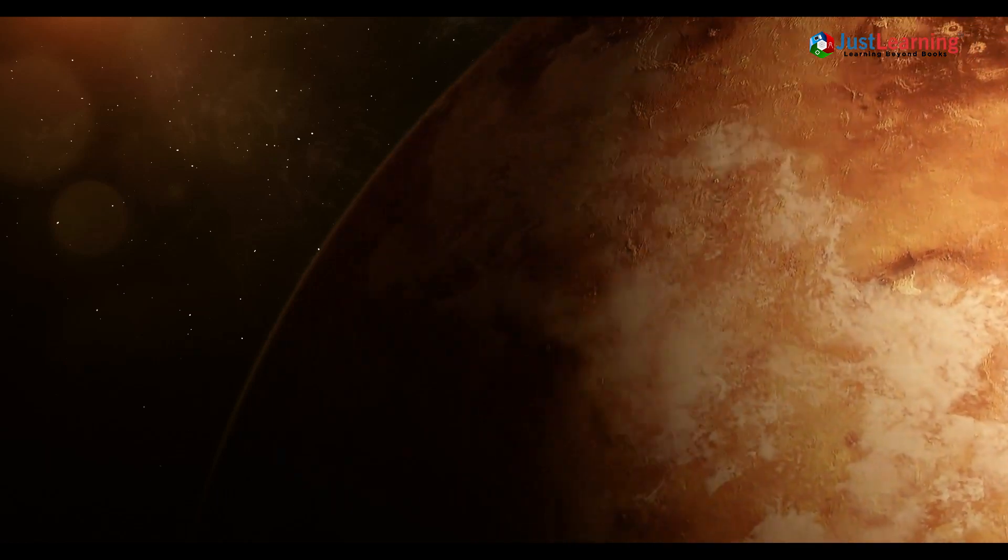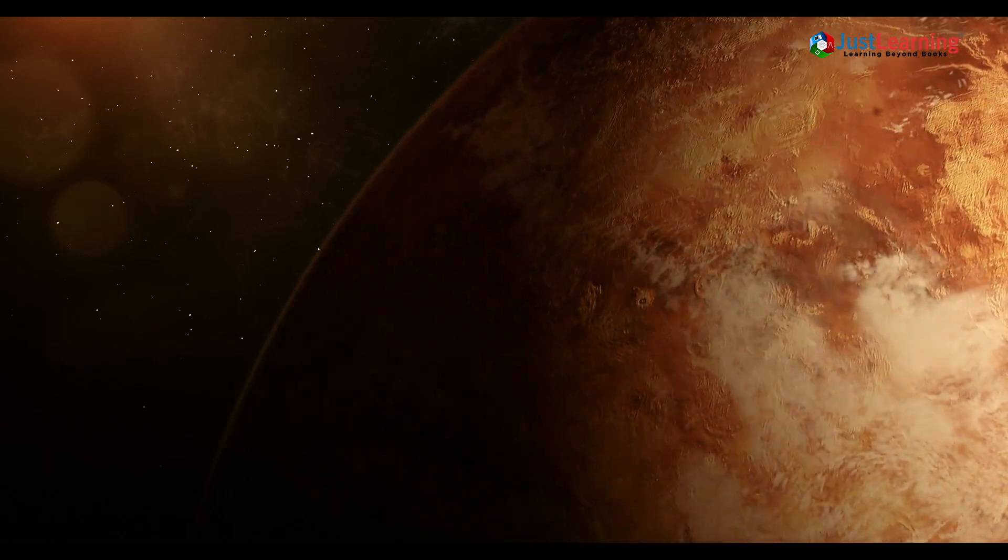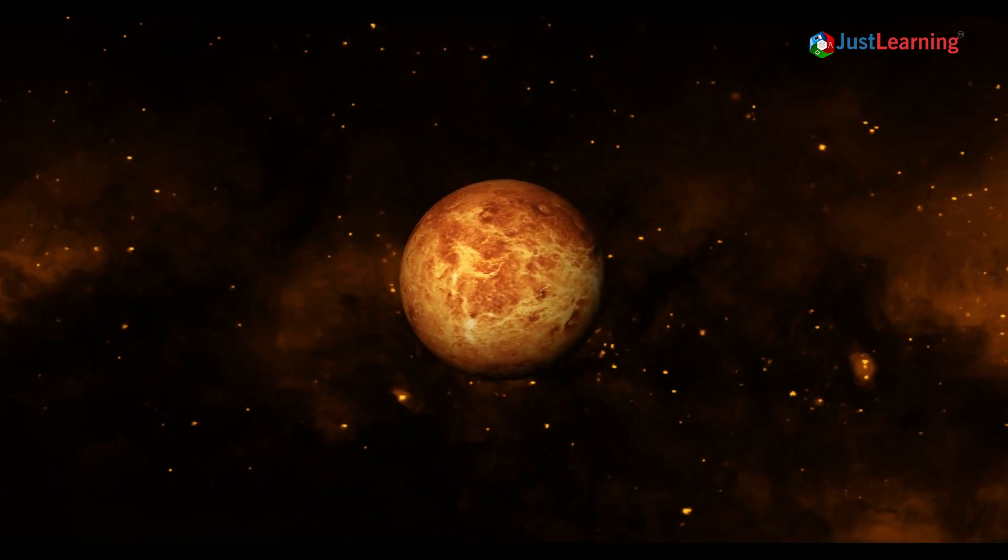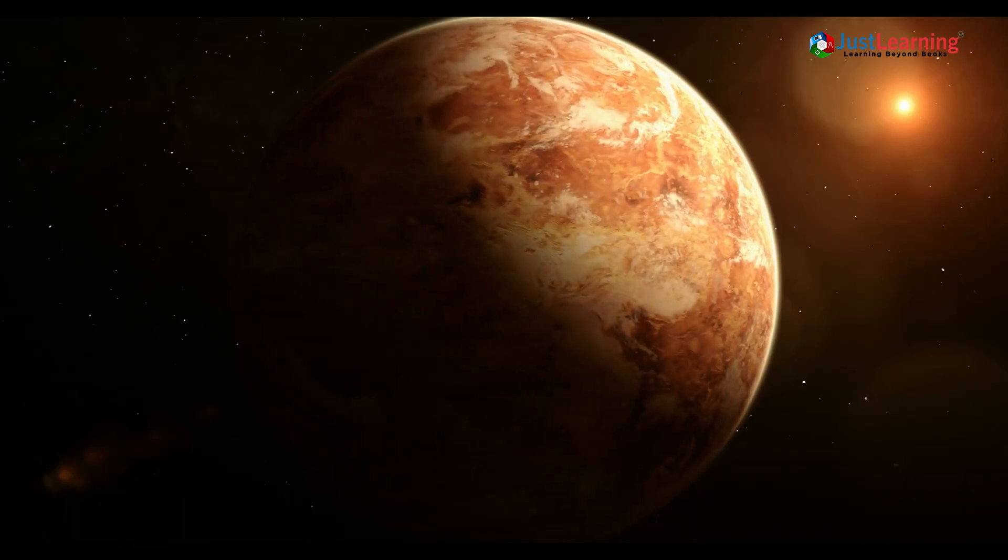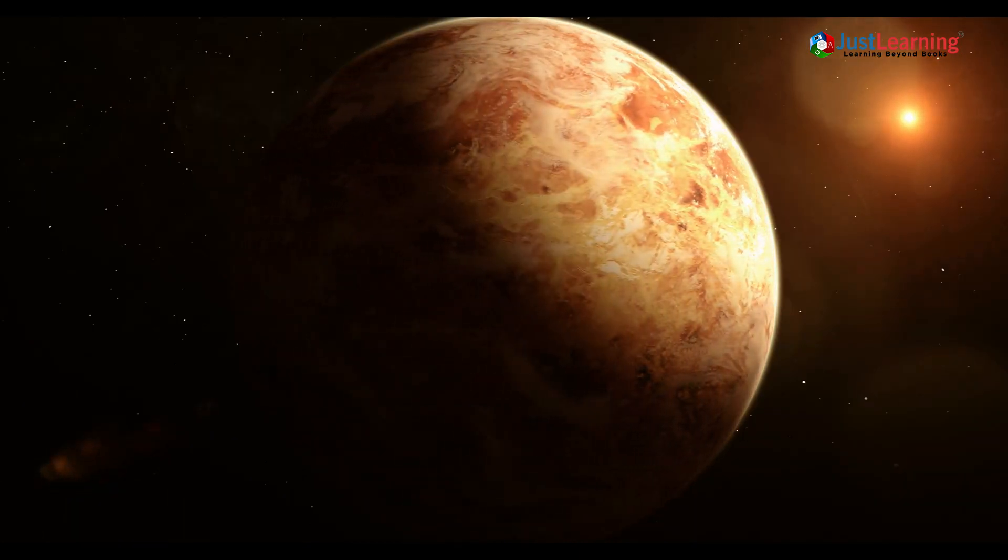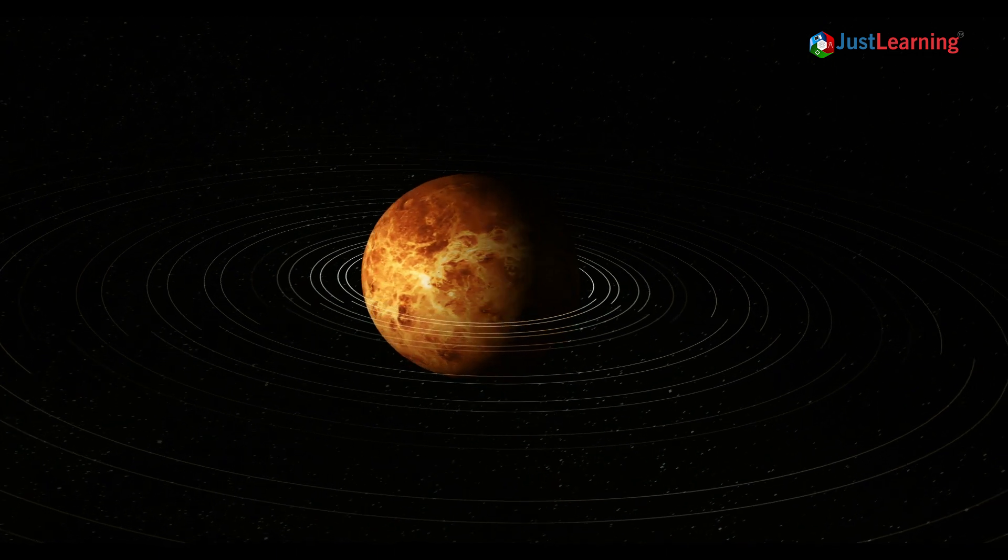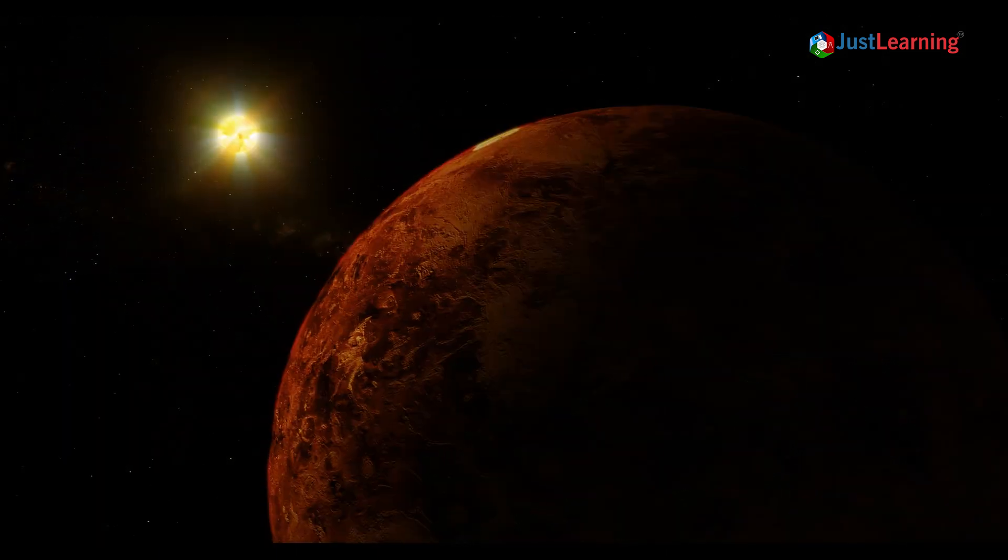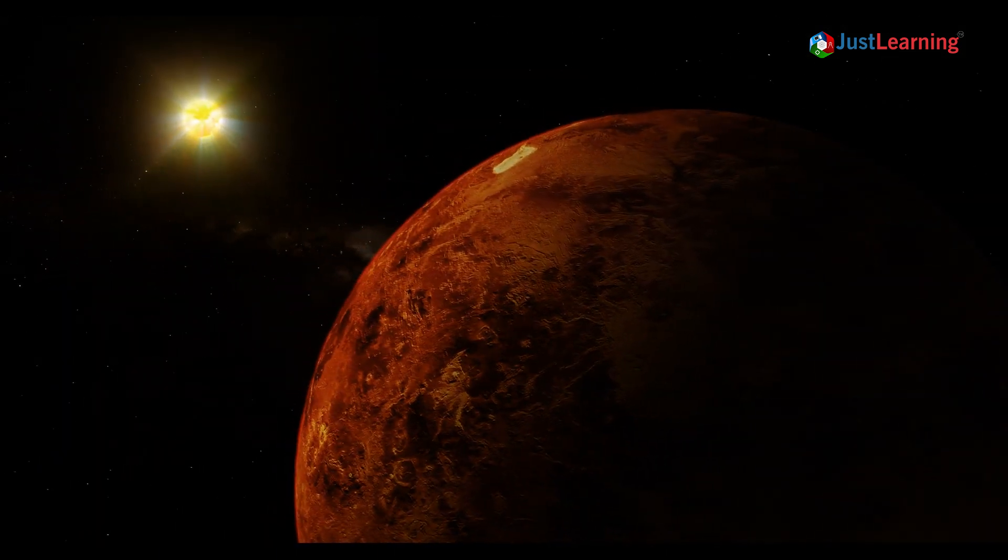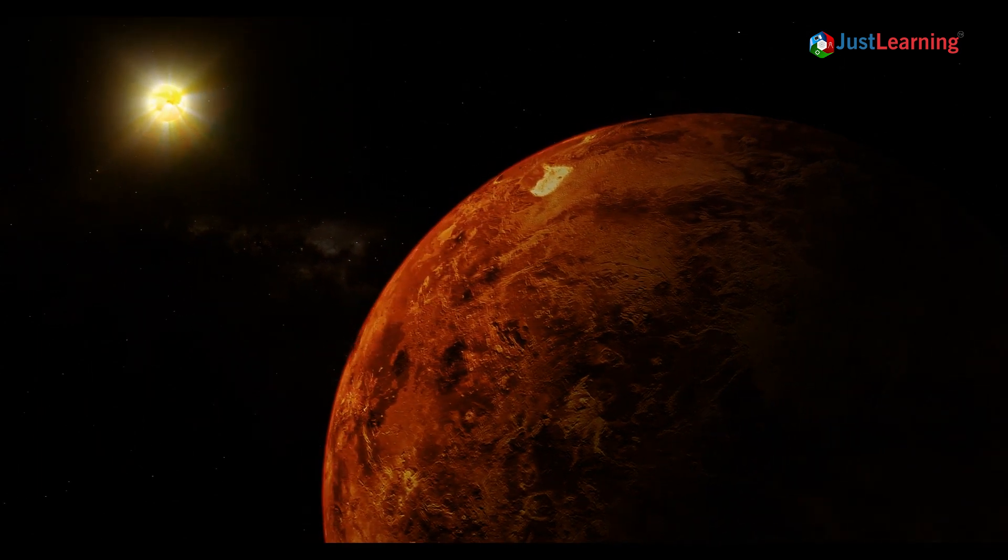Nine: One day on Venus is longer than one year. Venus has a slow axis rotation which takes 243 Earth days to complete its day. The orbit of Venus around the sun is 225 Earth days, making a year on Venus 18 days less than a day on Venus.